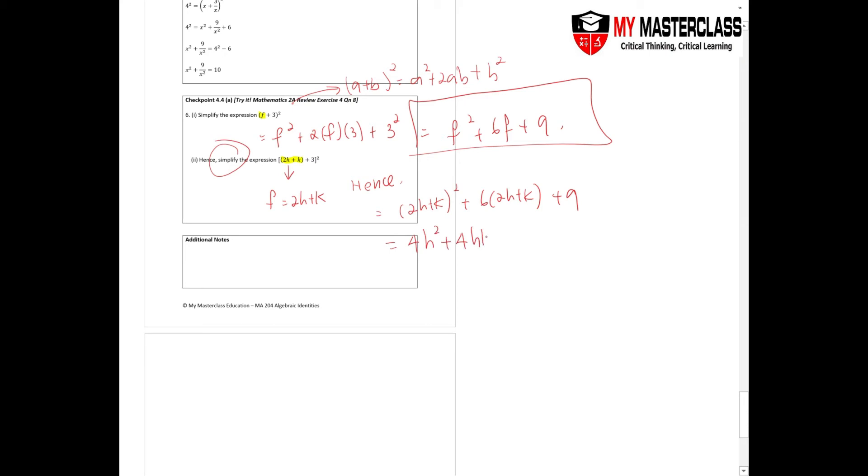To get 4h² + 4kh + k², then plus 6 times 2 gives you 12, so 12h + 6k + 9. This will be your final answer.